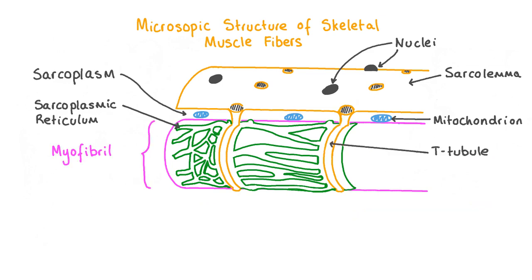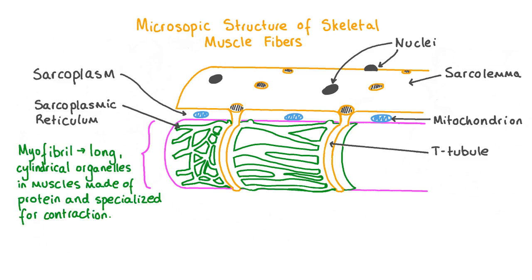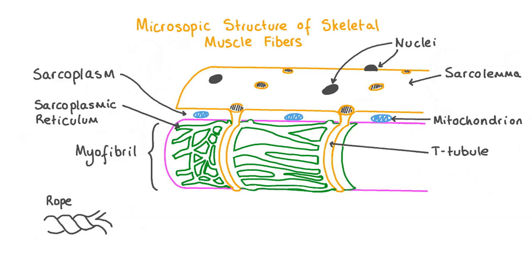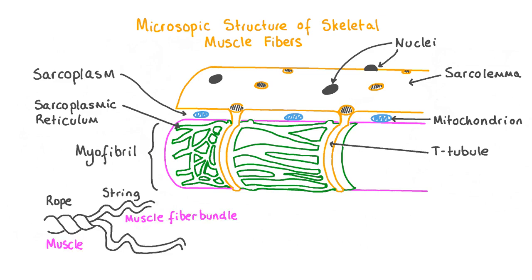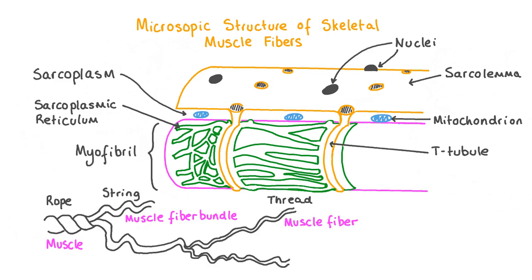Each muscle fiber contains long cylindrical organelles called myofibrils, which are made up of protein fibers. There can be between 1,000 and 2,000 myofibrils in just one muscle fiber, arranged in parallel to each other and to the muscle fiber along its interior. Myofibrils are specialized for contraction. You can think of the structure of muscles like a rope — ropes are made of individual strings, much like muscles are made of muscle fiber bundles, and those strings are made of threads, much like muscle fiber bundles are made of multiple muscle fibers. The individual strands making up each thread can be thought of as the myofibrils, which together provide the muscle with combined strength.